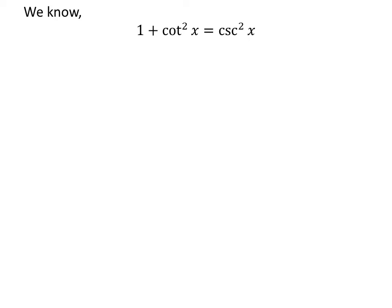So, square of cotangent of x is equal to square of cosecant of x minus 1. Thus, integral of square of cotangent of x is equal to integral of square of cosecant of x minus 1.